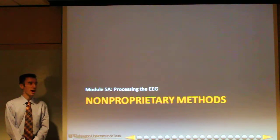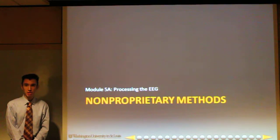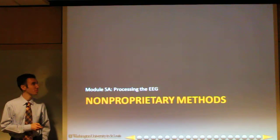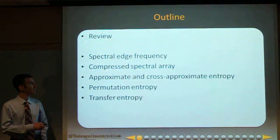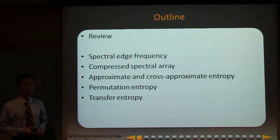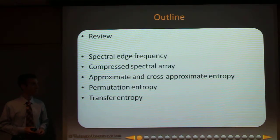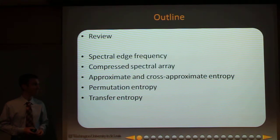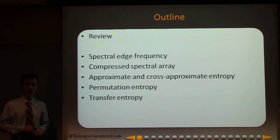In this module, we will be discussing non-proprietary methods for processing the EEG. After a brief review from a previous module, we will be discussing spectral edge frequency, compressed spectral array, approximate and cross-approximate entropy, permutation entropy, and transfer entropy.